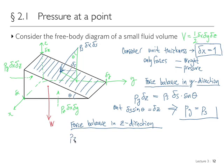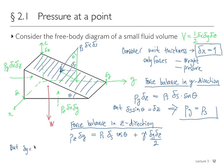For the Z-direction: PZ times Delta Y points upward, while the pressure component PS times Delta S times cosine theta points downward, along with the weight, which is gamma times Delta Y times Delta Z divided by two — with Delta X equal to one. Using Delta Y equals Delta S times cosine theta, we get PZ minus PS equals gamma times Delta Z divided by two.